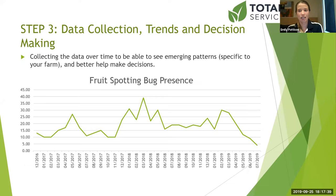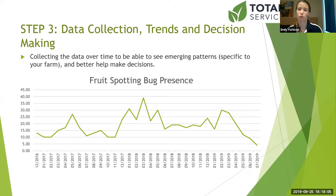Once you've got that data, you have a lot of power, especially when you've been collecting it over a long time. It doesn't just come into the short-term trigger point of 'do I spray or not spray' - it also comes into long-term trends. For example, in May when we have really high fruit spotting bug pressure, should I be looking more for fruit spotting bug? Calculating these trends for your farm gives you a lot of decision-making power.